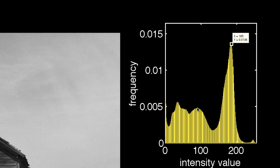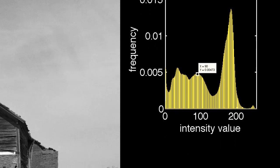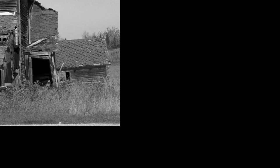At this location, about 0.47% of the pixels have an intensity equal to 90. It's also instructive to show a plot of the cumulative frequency. The cumulative frequency plot shows the proportion of pixels that have an intensity that is less than or equal to a particular value.